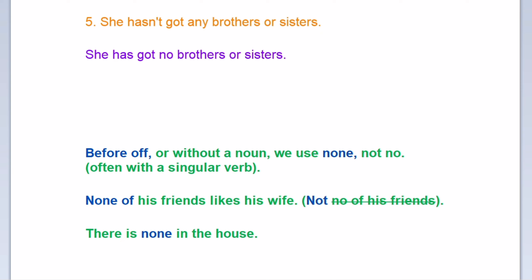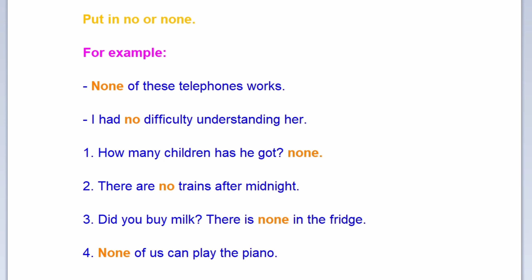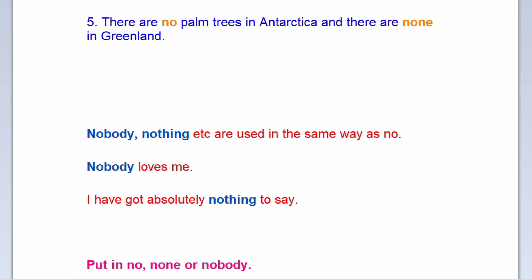She hasn't got any brothers or sisters. Before of or without a noun, we use none, not no — often with a singular verb. None of his friends like his wife — but not: no of his friends. There is none in the house. Putting no or none: none of these telephones works. I had no difficulty understanding her. How many children has he got? None. There are no trains after midnight. Did you buy milk? There is none in the fridge. None of us can play the piano. There are no penguins in Antarctica, and there are none in Greenland.